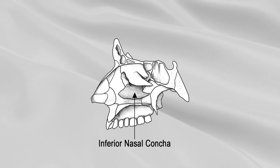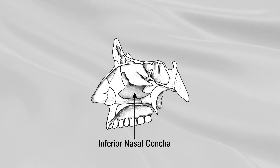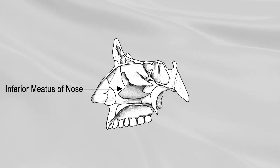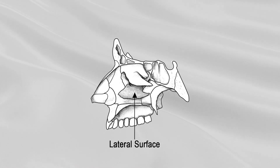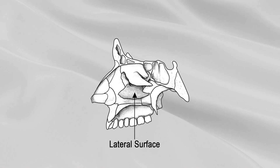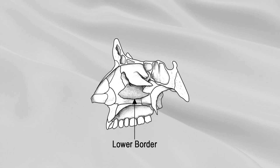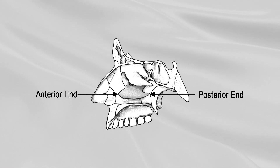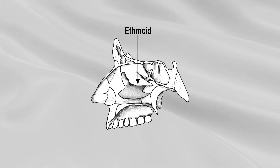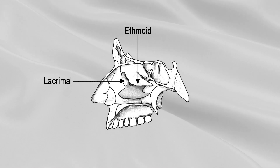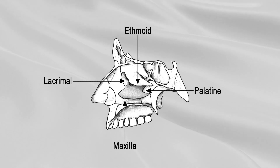Between each concha and the floor of the nose lies the inferior meatus of the nose. Each concha has two surfaces, medial and lateral, two borders, upper and lower, and two extremities, anterior and posterior. Each inferior nasal concha articulates with four bones: the ethmoid, lacrimal, maxilla, and palatine.